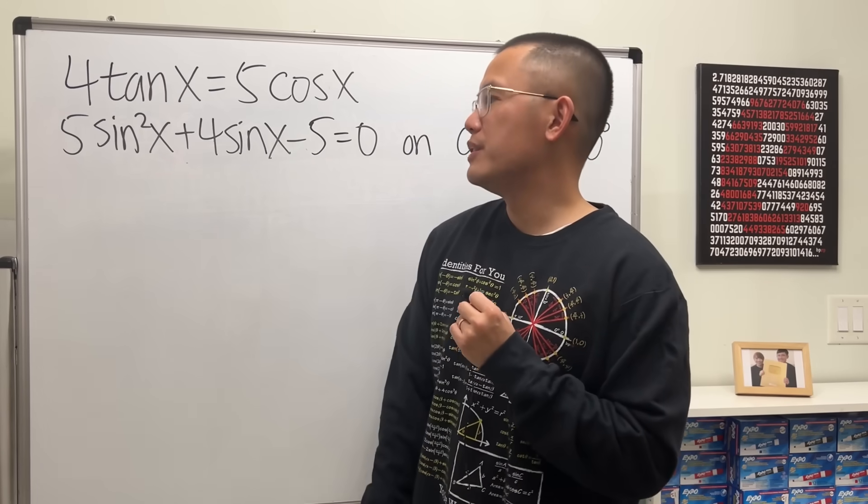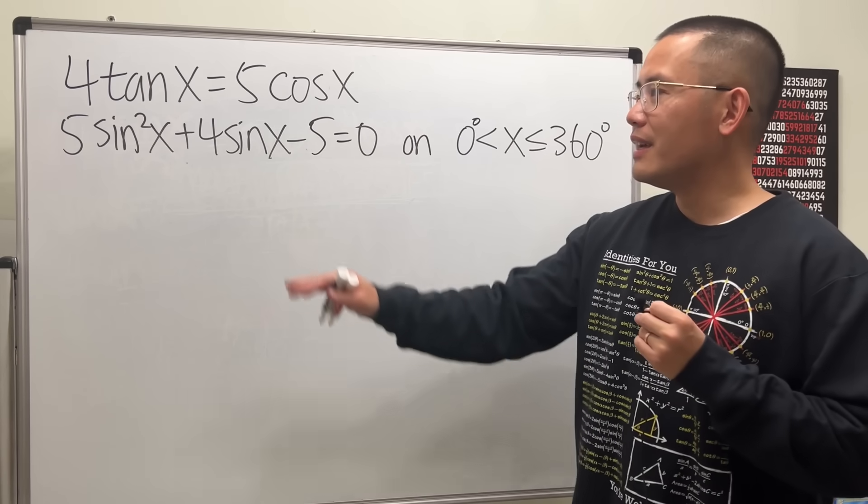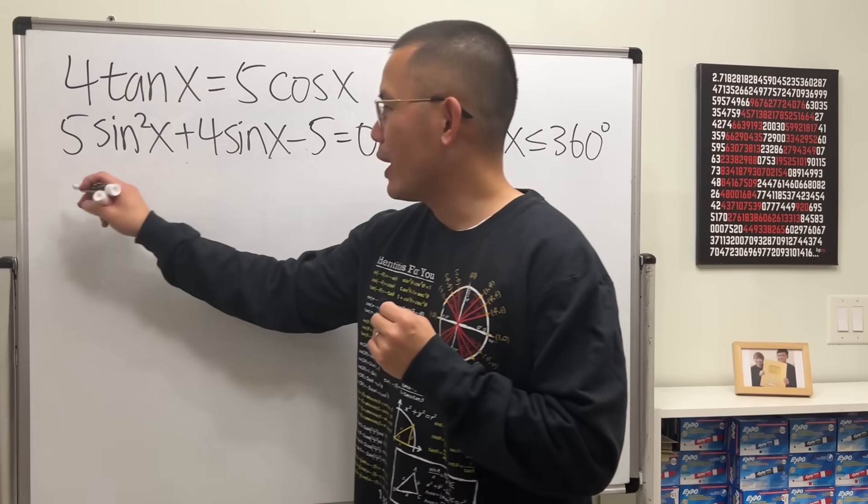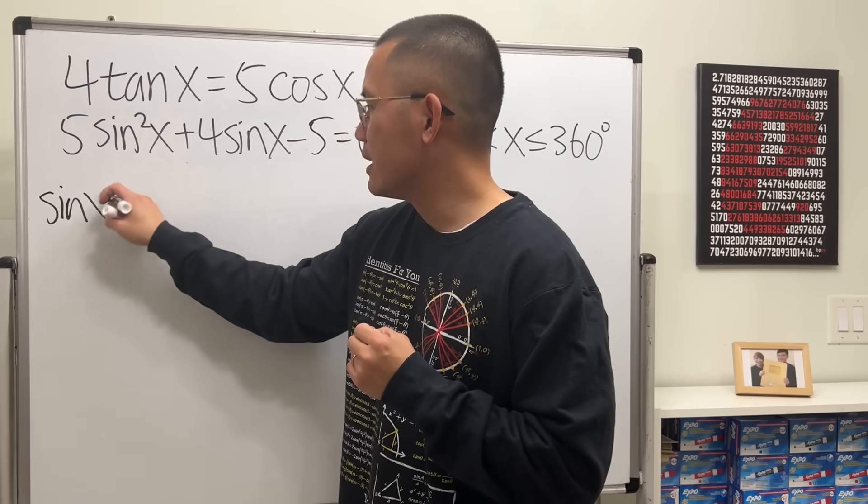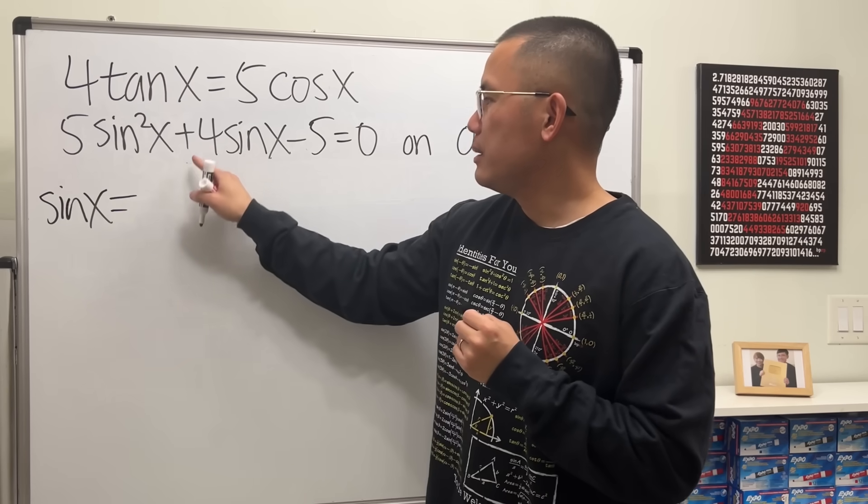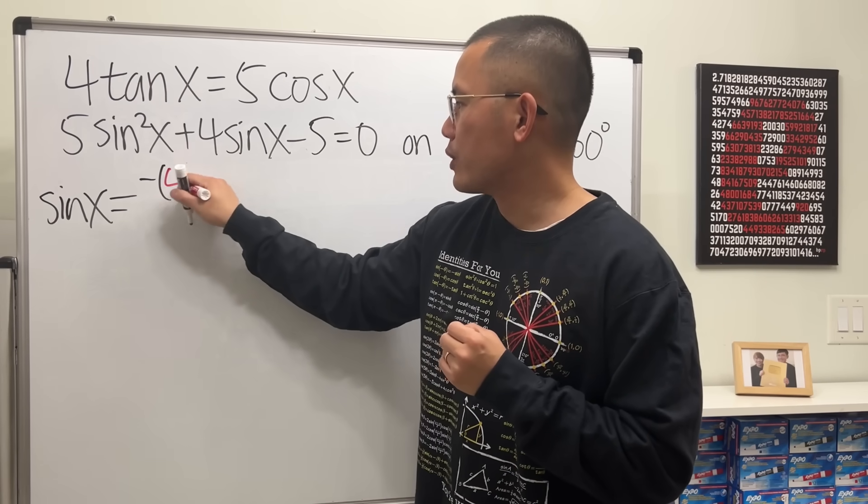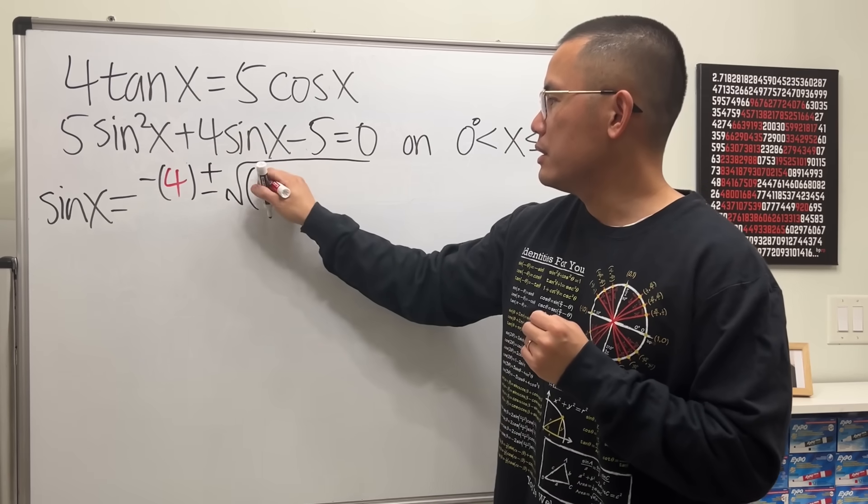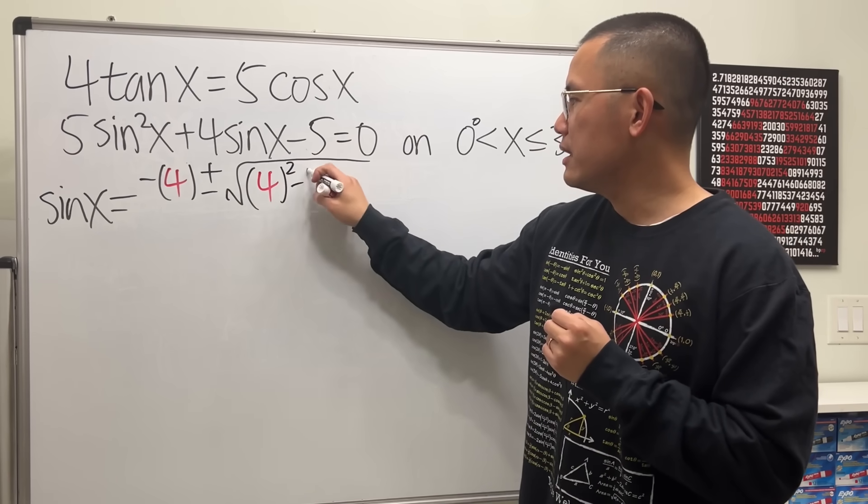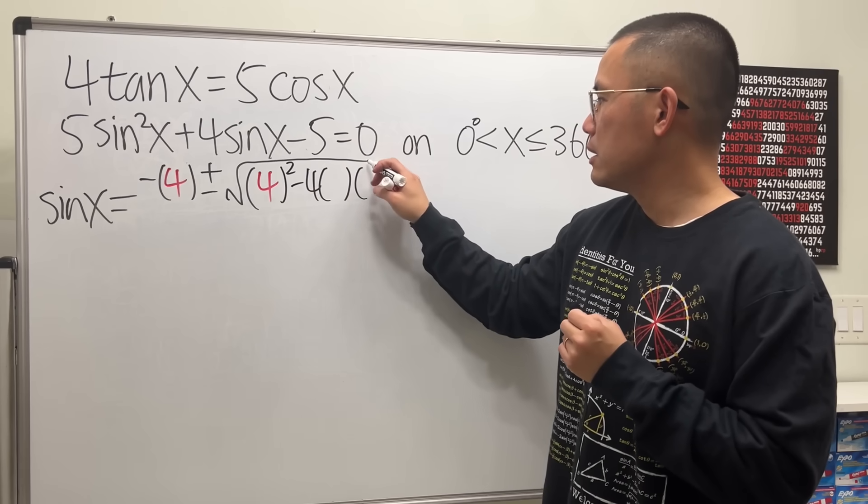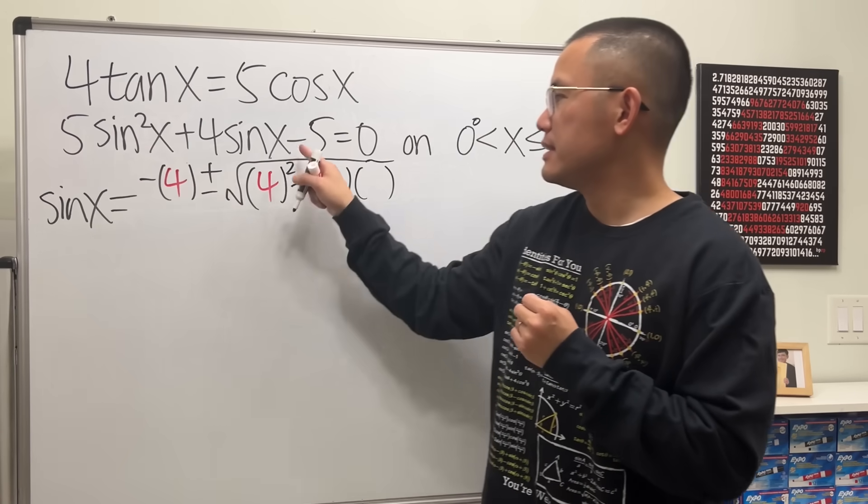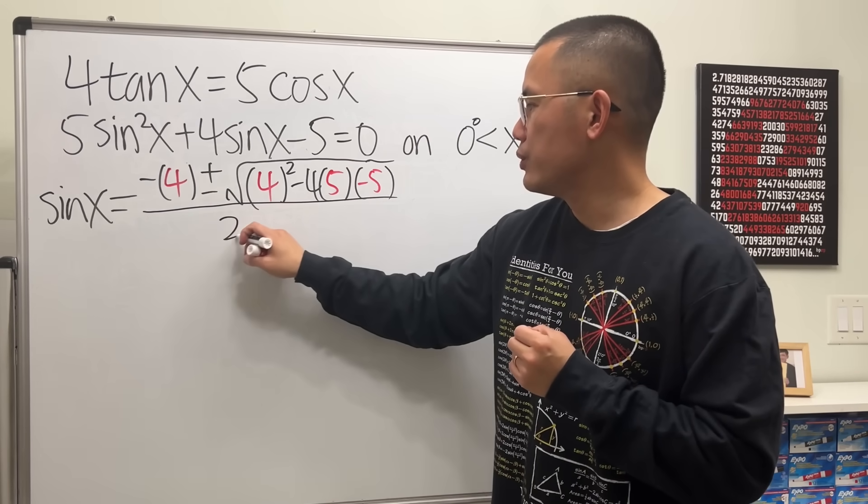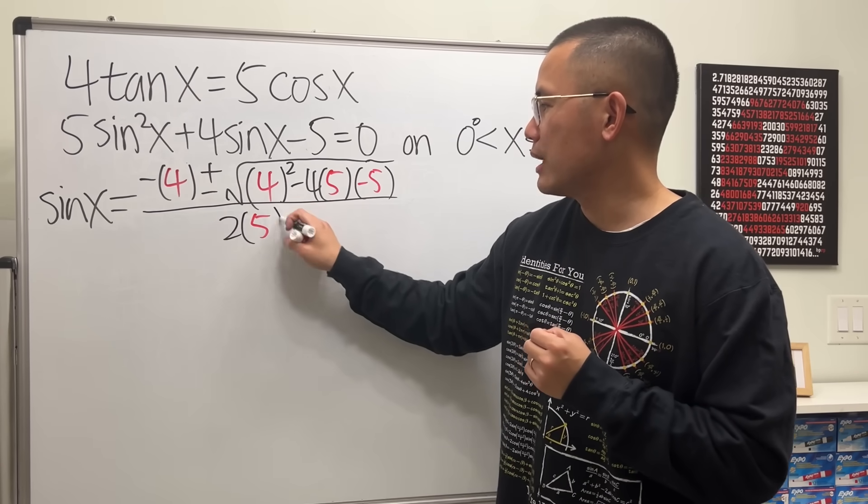We just have to solve this equation on the interval 0 to 360 degrees. Notice this equation is a quadratic equation, but in terms of sine x. It's not factorable, but it's okay. We can use the quadratic formula. Write down sine x. That's equal to negative b. So we have negative 4 to begin with. Plus or minus square root, b squared minus 4ac. a is 5, c is negative 5. And then over 2 times a, which is 2 times 5.